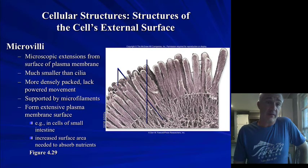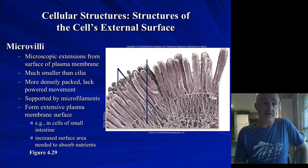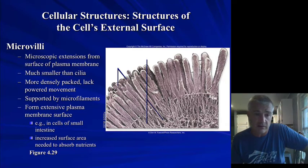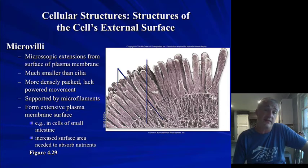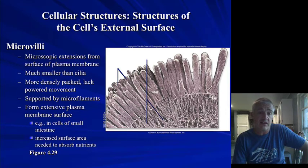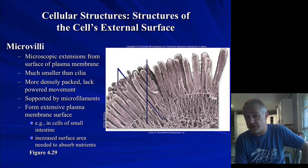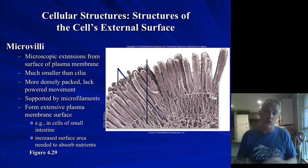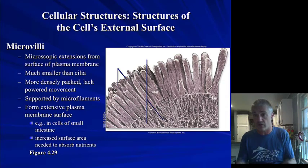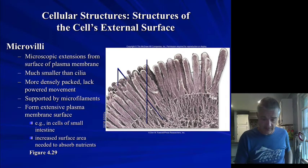Microvilli are another non-membranous structure — finger-like extensions that are much shorter than cilia. What these do is increase the surface area of the cell. Generally we're going to see these in cells that are doing a lot of absorption, such as in the small intestine. More surface area means more ability to absorb nutrients through that cell membrane.